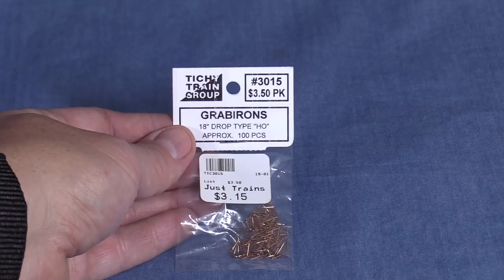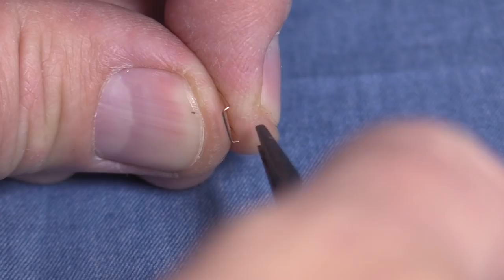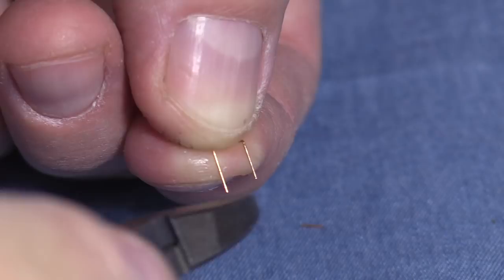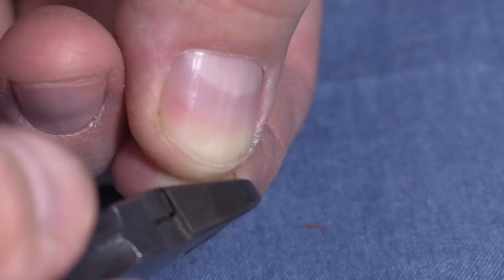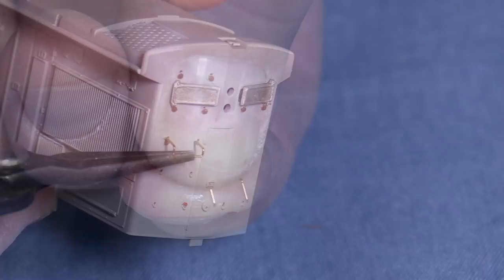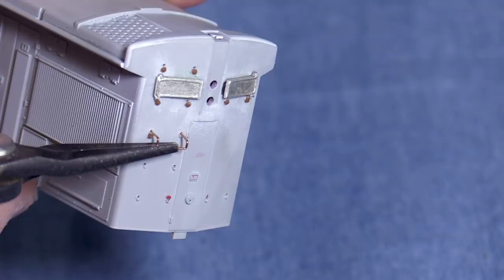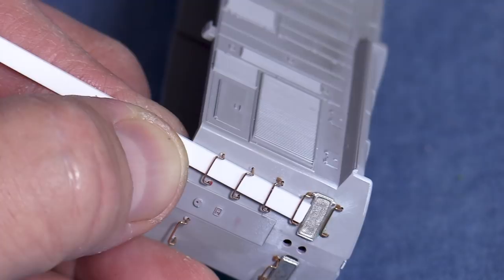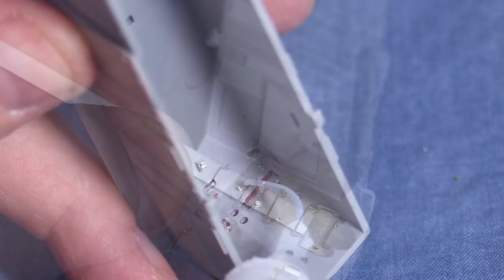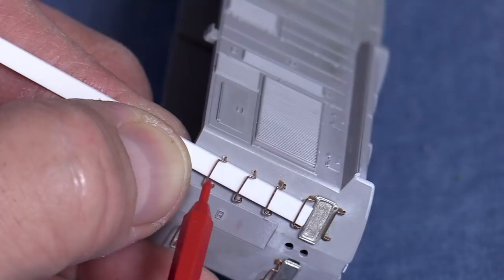I'm using Titchy 3015 drop style grab irons. Before I install them, I like to square up the ends with some needle nose pliers. I also cut the stems shorter. I'll insert the grab irons into the holes with needle nose pliers. Some 040 styrene strip will work well to help space the grab irons from the hood. The goal is to make them all uniform. I'll glue the grab irons from the inside using CA. Don't do this with a spacer in place as if any glue seeps through the holes it can make a mess on the outside of the model.